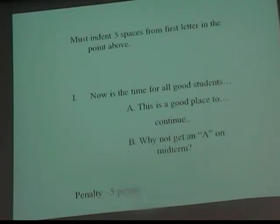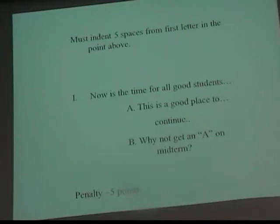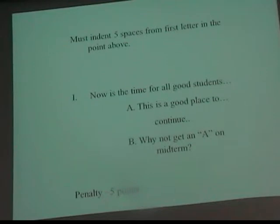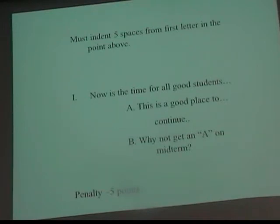You must indent five spaces from the first letter in the point above — this is one of my picky rules. The best way to do this is to turn off the automatic outline function in Word. If you don't know how to do this, ask another person or come in and I'll show you. If you start making an outline, Word thinks you want an outline and will automatically put up a capital A if you subdivide. If you hit a tab right after a sentence, it automatically gives you a Roman numeral two, then capital A, and so on.